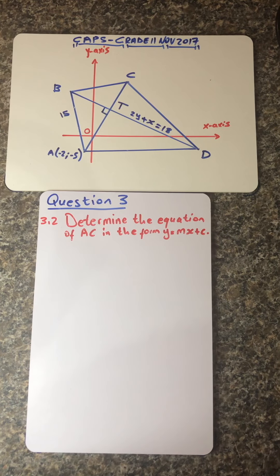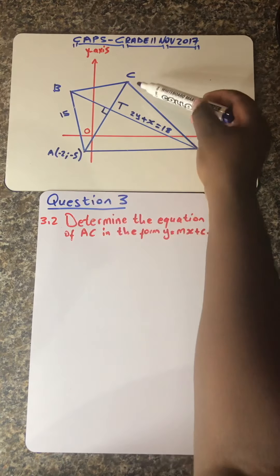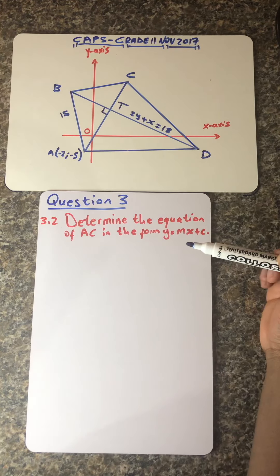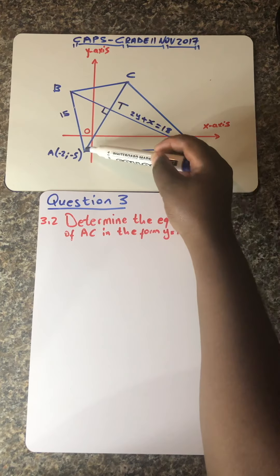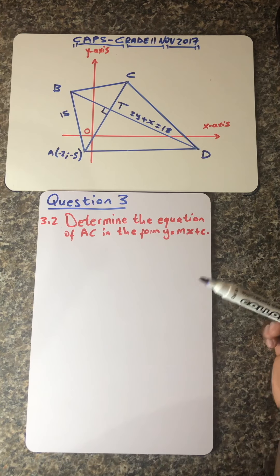So without any waste of time, I've got question 3.2 — it's a continuation of the question we started yesterday. Question 3.2 says: determine the equation of AC in the form y = mx + c. Looking at the diagram, you can see point A and point C, so you are requested to determine the equation of that line AC.